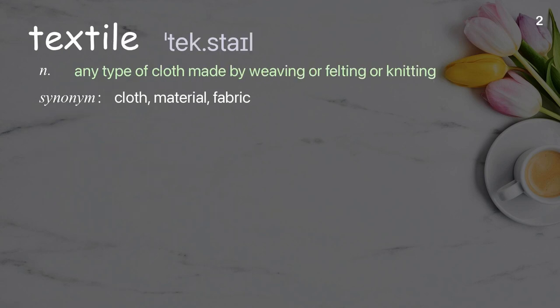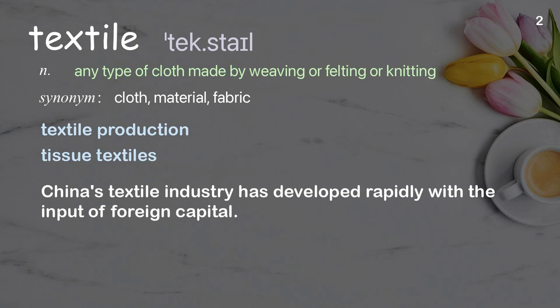Textile: Any type of cloth made by weaving, felting, or knitting. Examples: Textile production. Tissue textiles. China's textile industry has developed rapidly with the input of foreign capital.